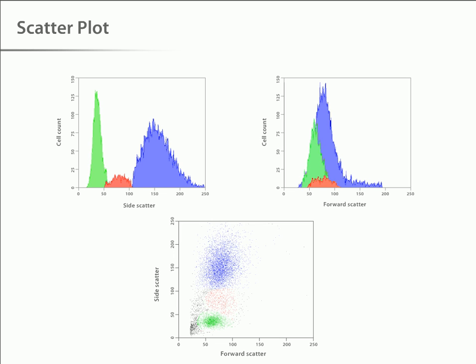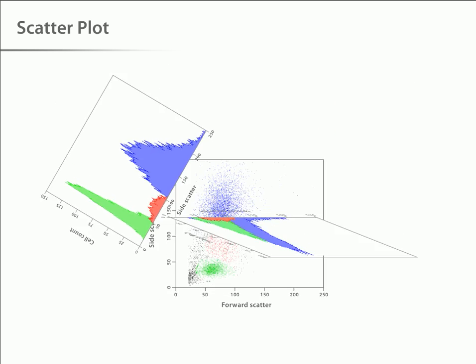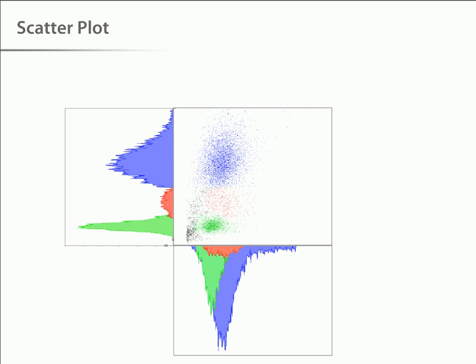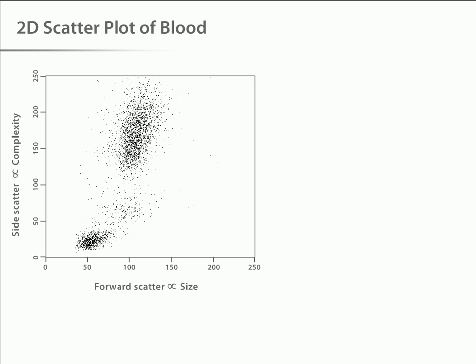This is done through the use of two-dimensional dot or scatter plots. You can see that the peaks from the forward and side scatter histograms correlate with the colored dots in the scatter plot. Now we can view the results obtained when we create a scatter plot using forward and side scatter data from a typical peripheral blood cell run.